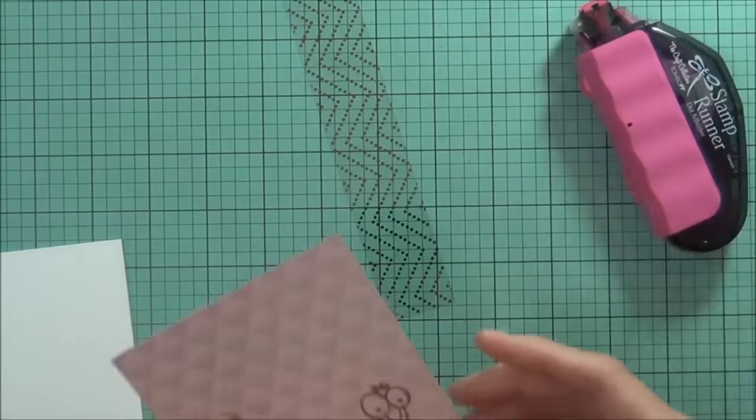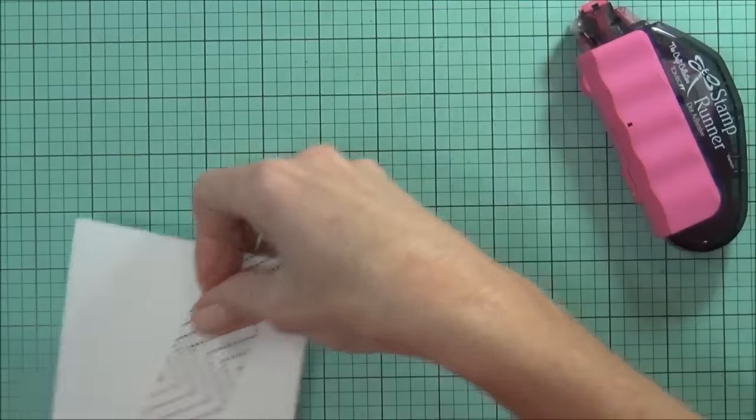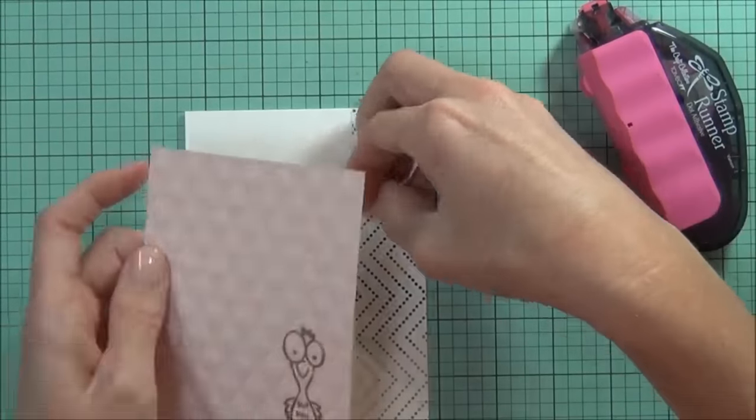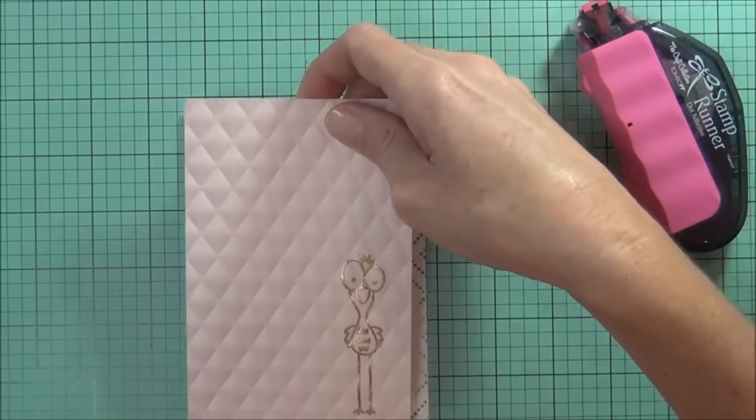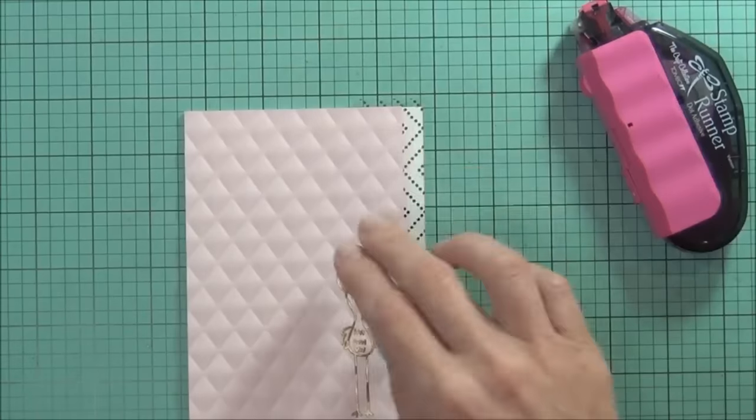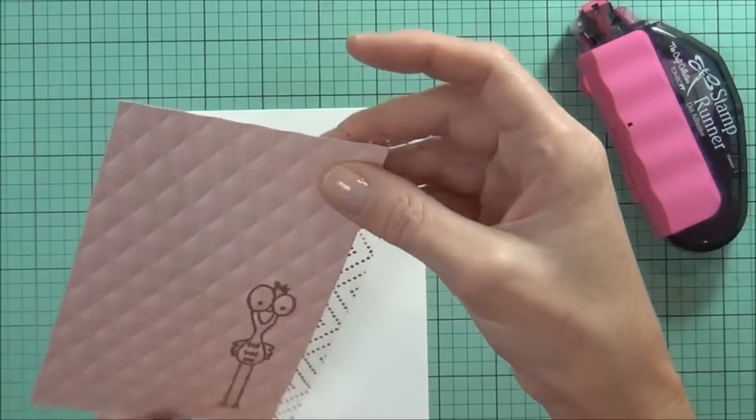So what I want to do is actually pop this up with my front panel. To do that, I'm just sort of laying that on top and I've added some stamp runner to the back of my pink panel, and then I can cut off any excess.